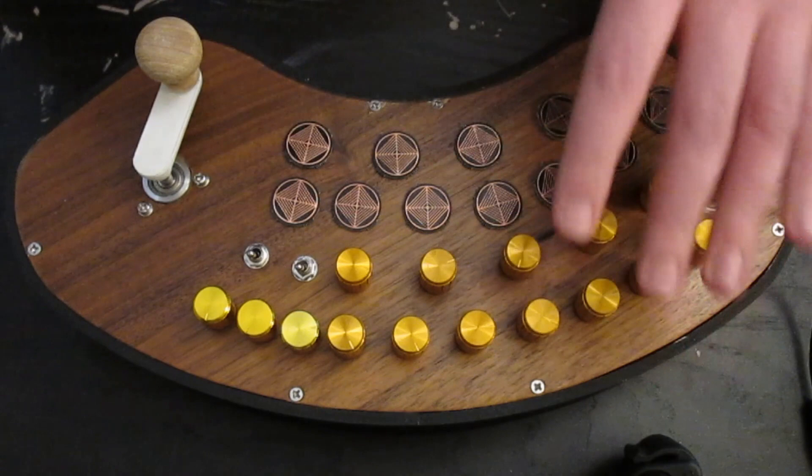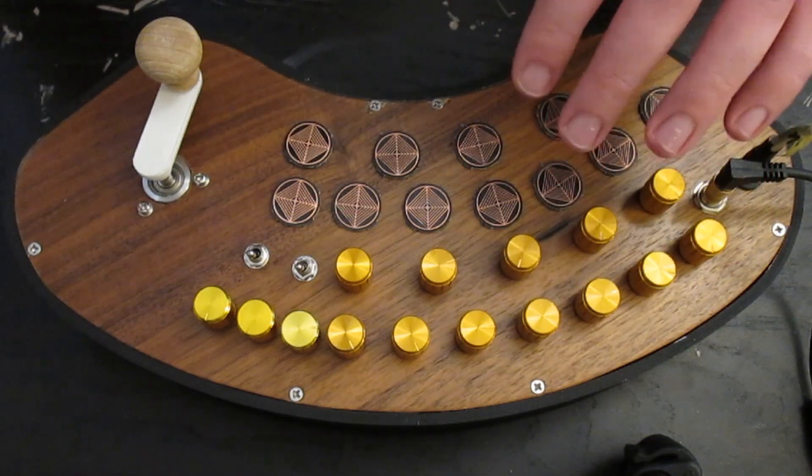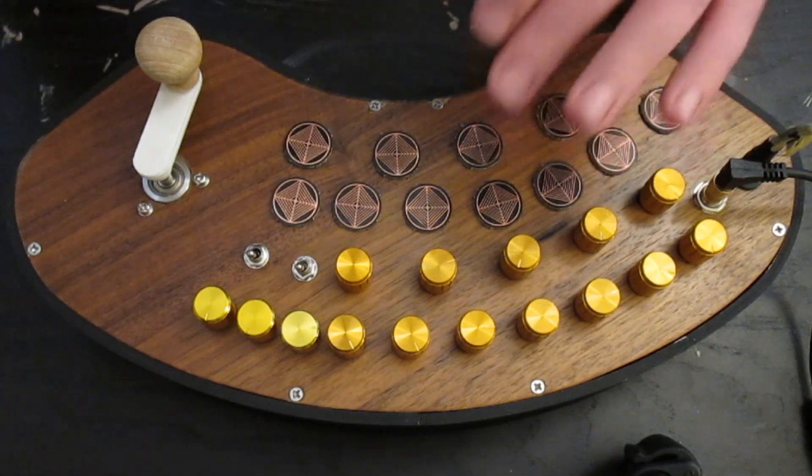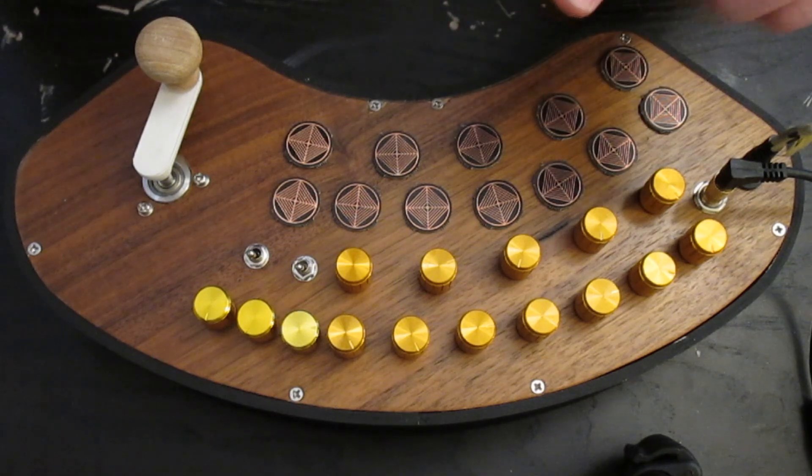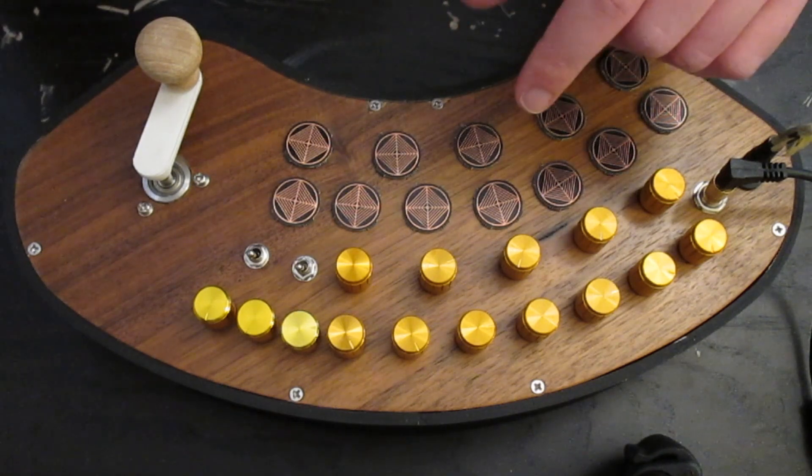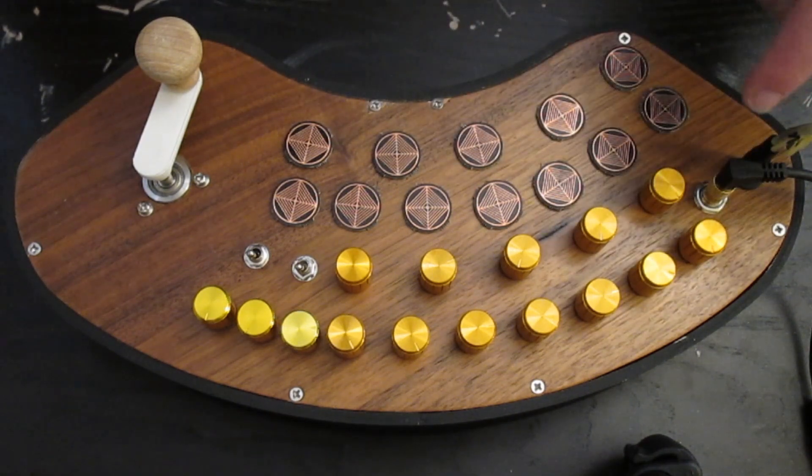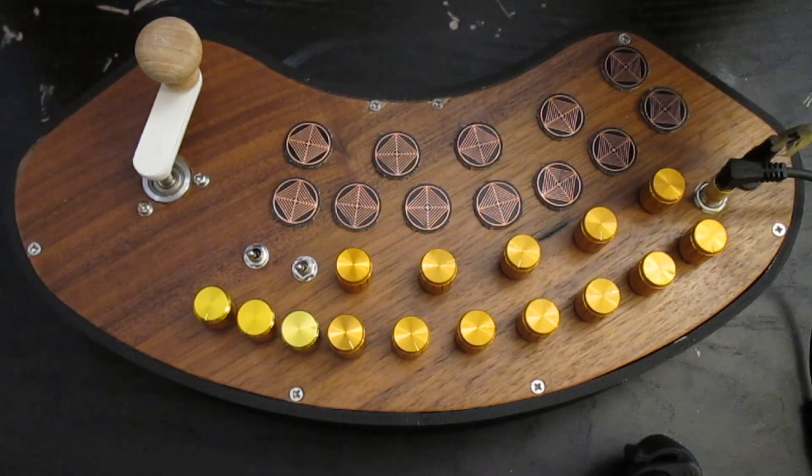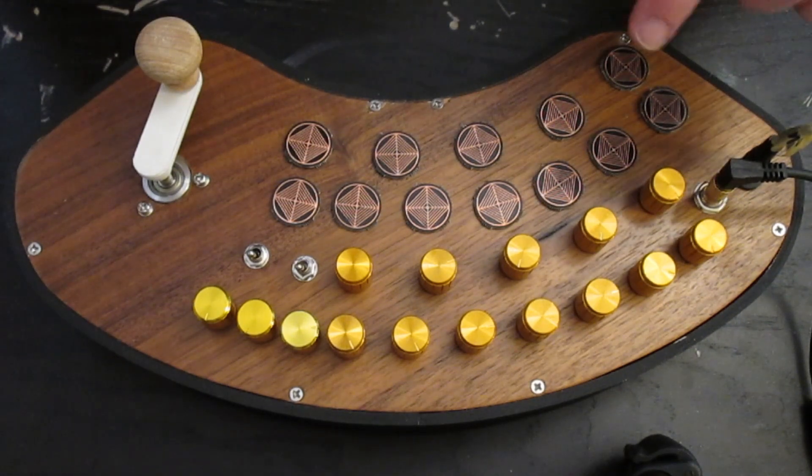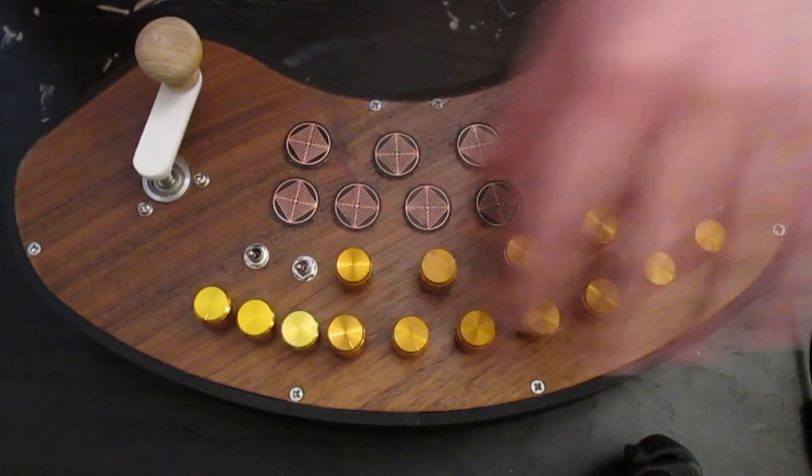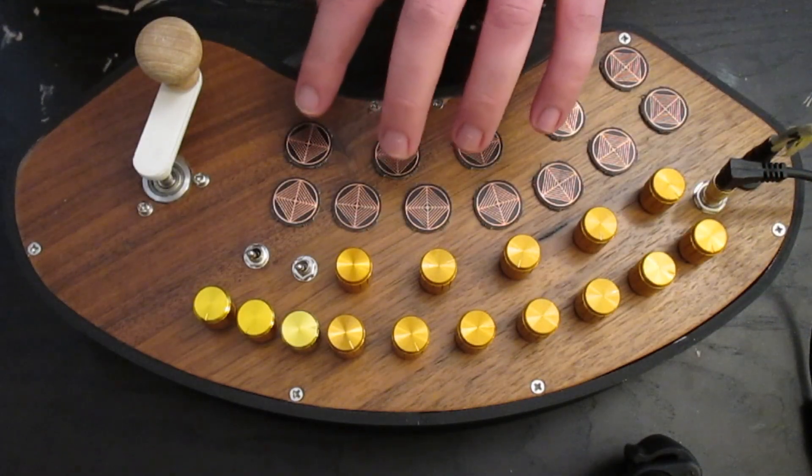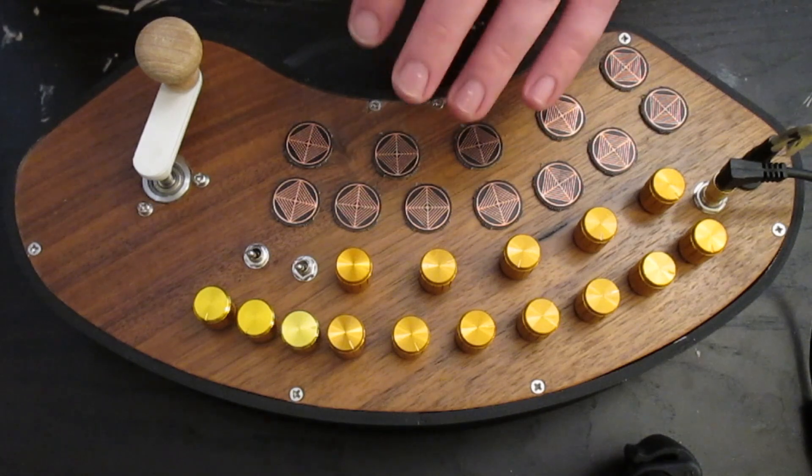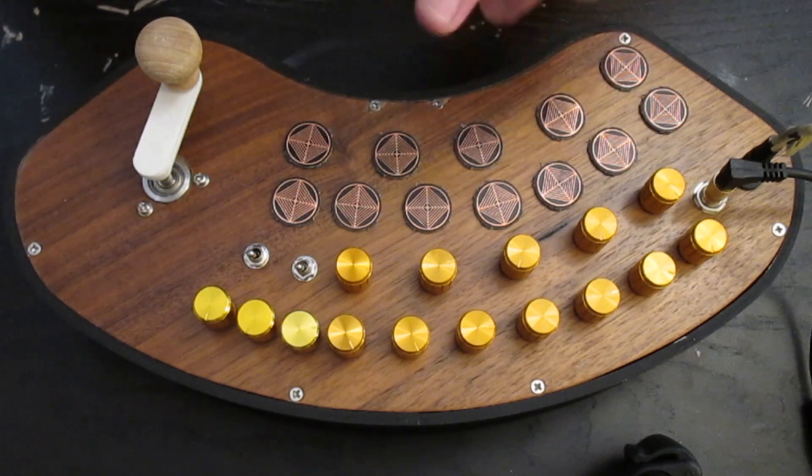So this project was done using a Teensy 3.2 for all the synthesis and control functions with the Teensy audio shield handling the DAC and output amplification. I used a CMOS 4067 multiplexer to simplify the routing for the pots. And the touch plates all go through an Adafruit MPR-121 breakout board which communicates with the Teensy over I2C.